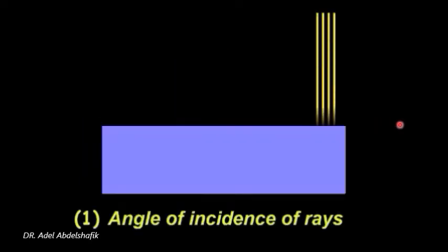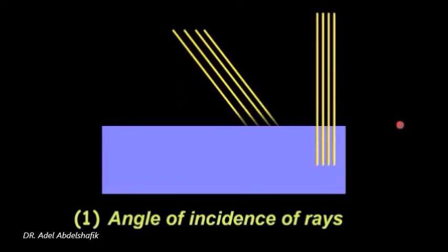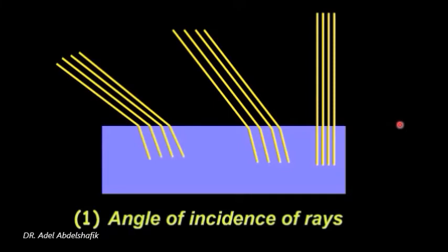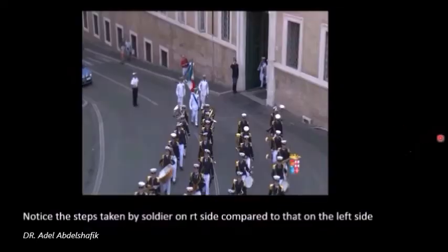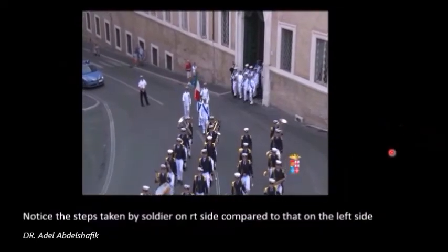When it comes back again to air it will restore the same original speed. If rays are coming perpendicular there will be no bend. But when it comes with an angle there will be change of path. The amount of change of path varies with the degree of incidence of rays. To understand this notice this short video.